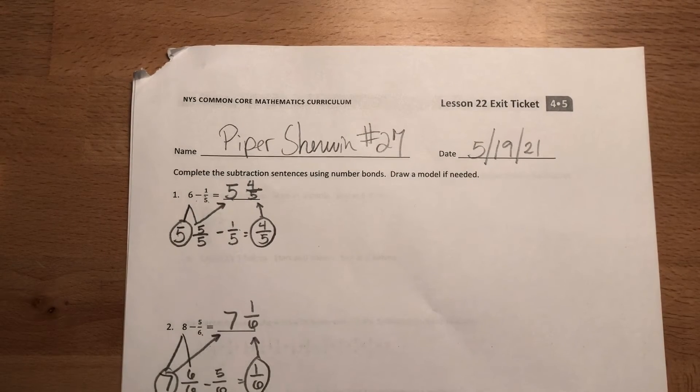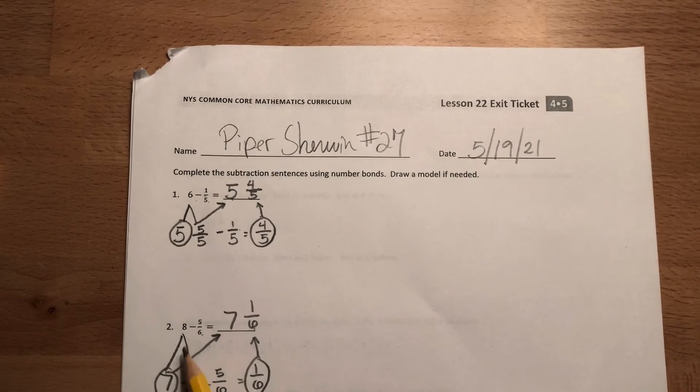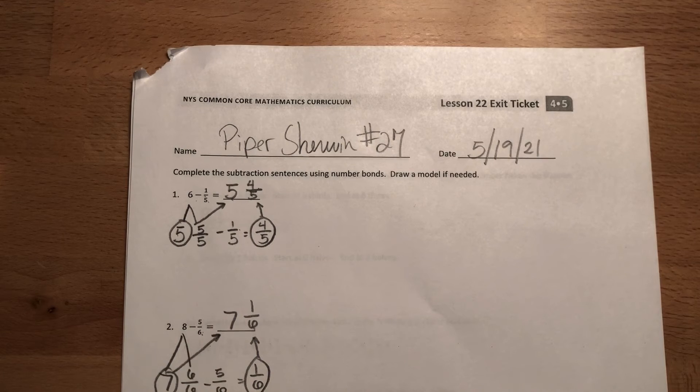Same thing here: 8 minus 5/6 gives me 7 and 1/6. I take my 8 and put it into 7 and 6/6 over here. 6/6 minus that 5/6 equals 1/6, so you get 7 and 1/6.